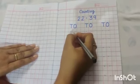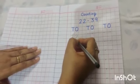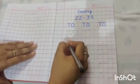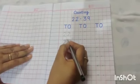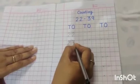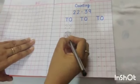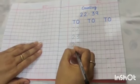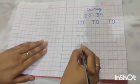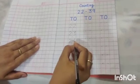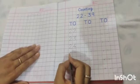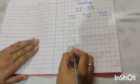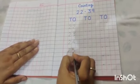22. Next number is 23. Okay, speak with me kids. Next number is 24. 25.